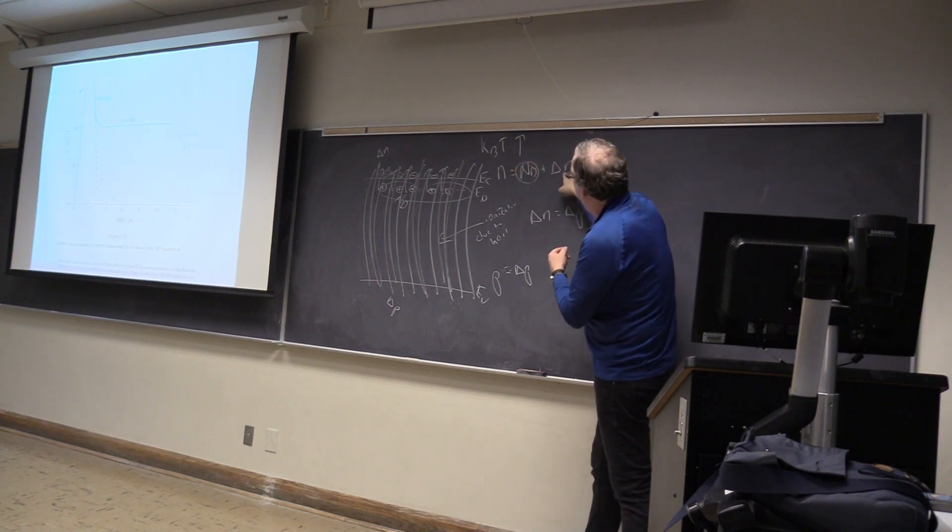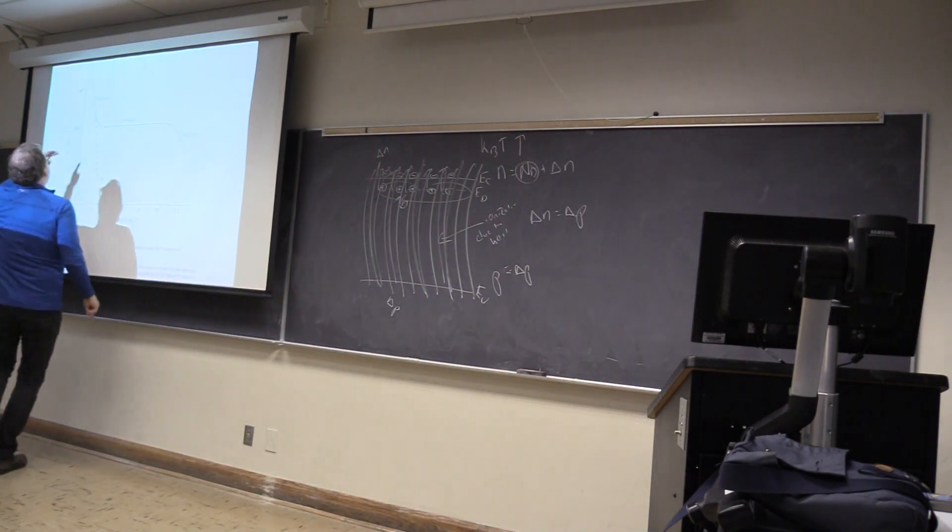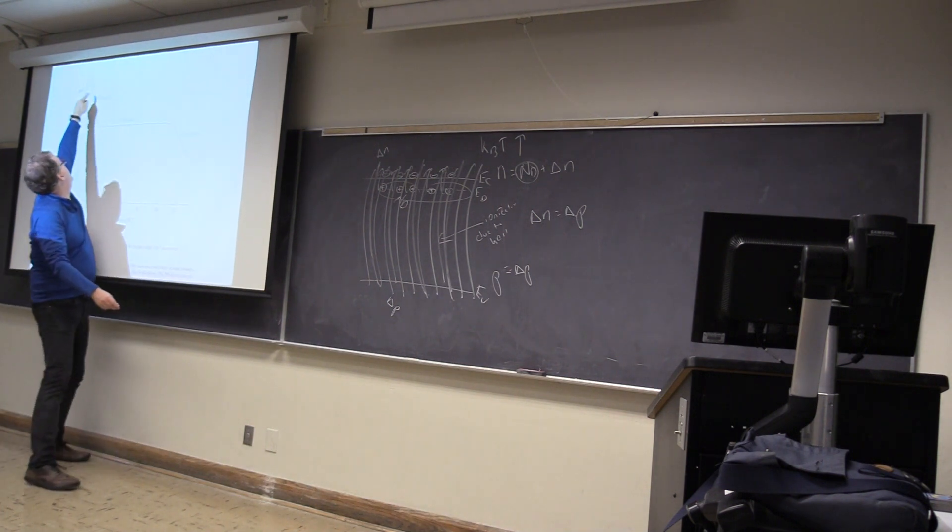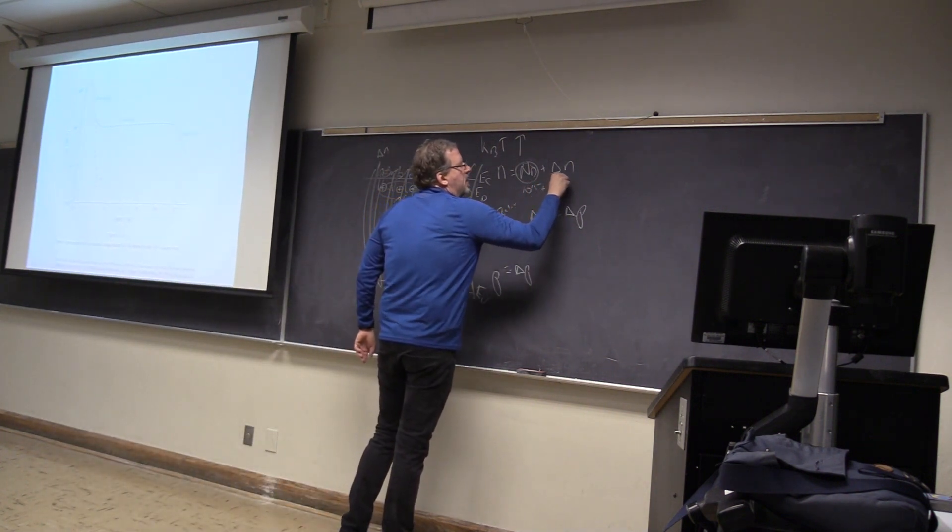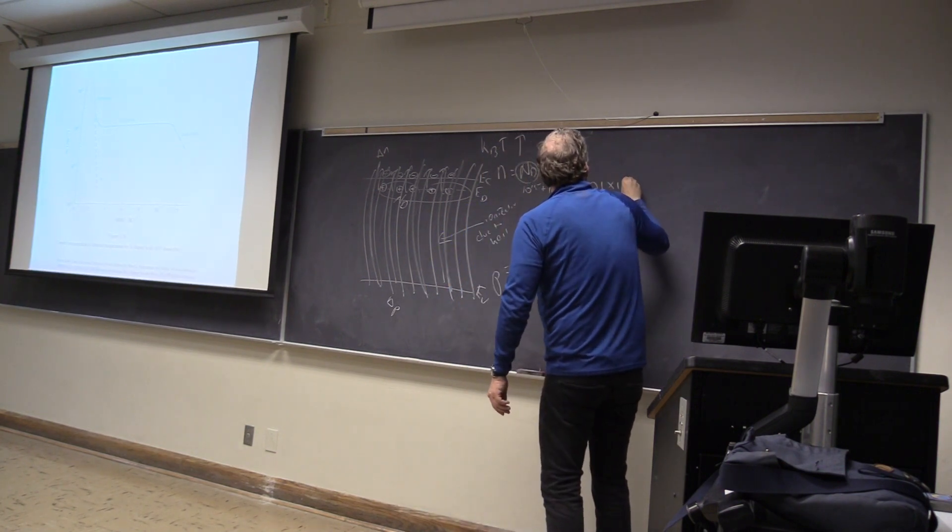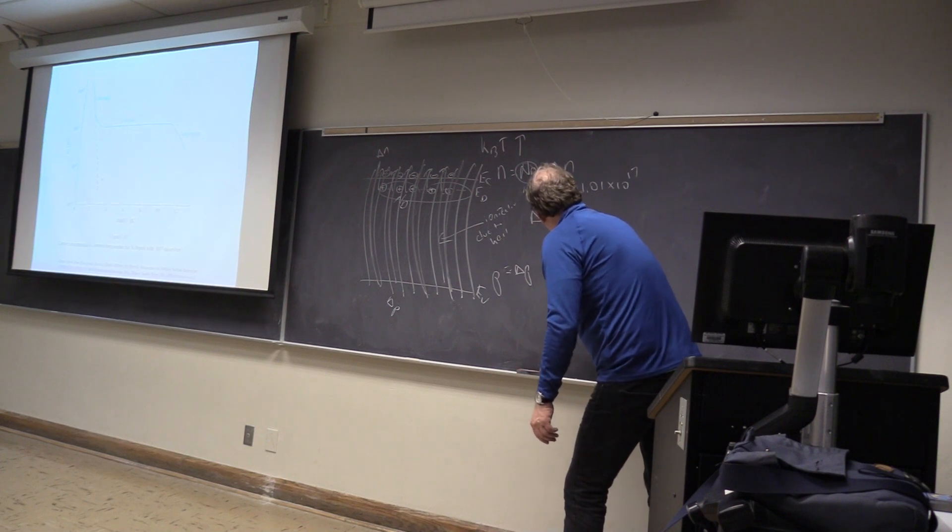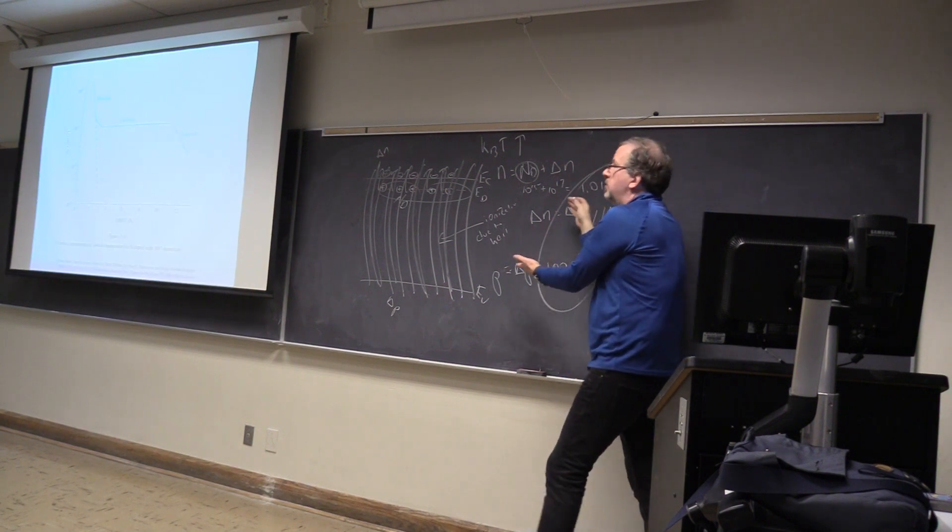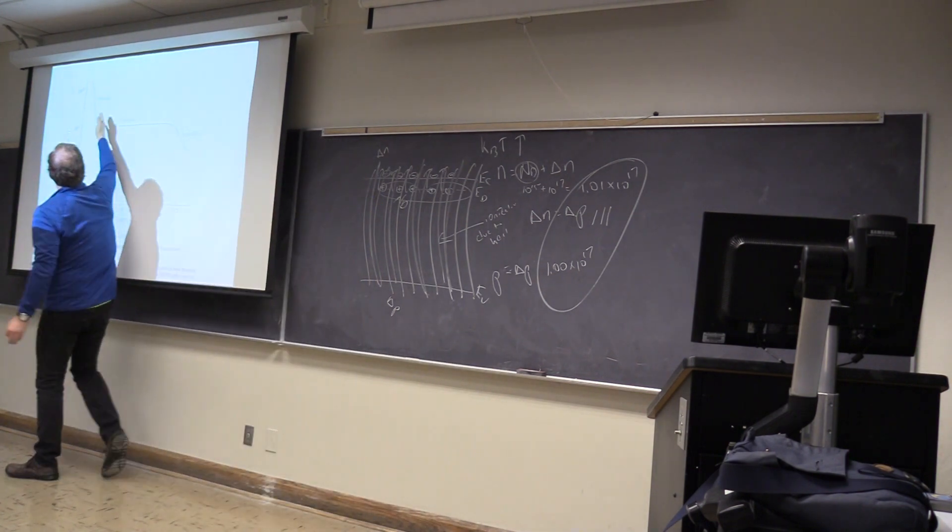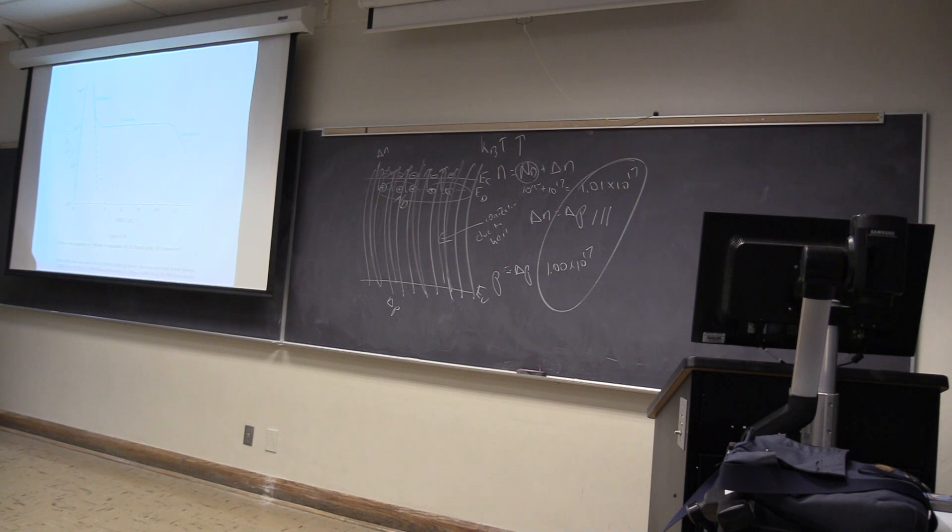As this gets hotter, this becomes a smaller and smaller fraction of this, and that's why this goes from 10 to the 15 to 10 to the 17. In this particular case, that data point right there is 10^15 plus 10^17 equals 1.01 times 10^17, and down here we have 1.00 times 10^17. So these are by all intents and purposes equal to each other. Therefore we actually use the term intrinsic even though it's doped, because it's lost its doping efficacy.